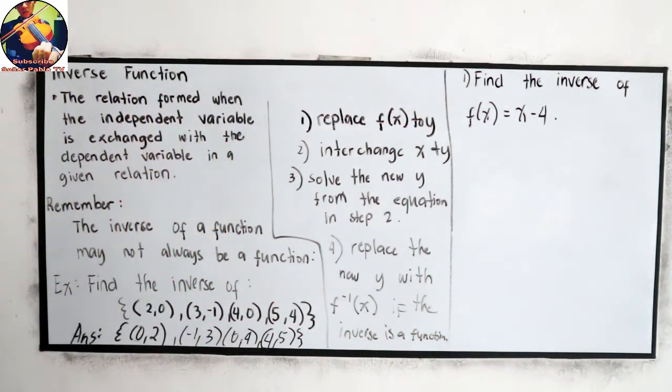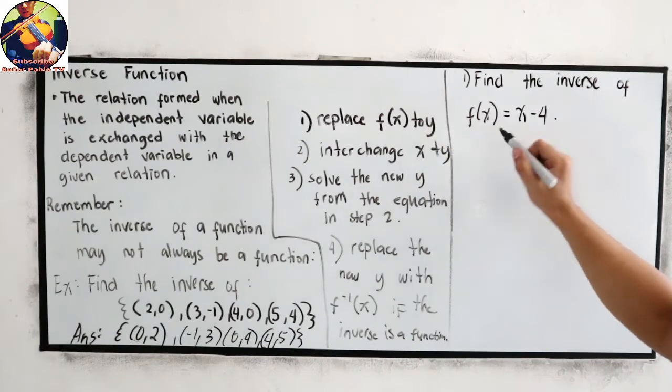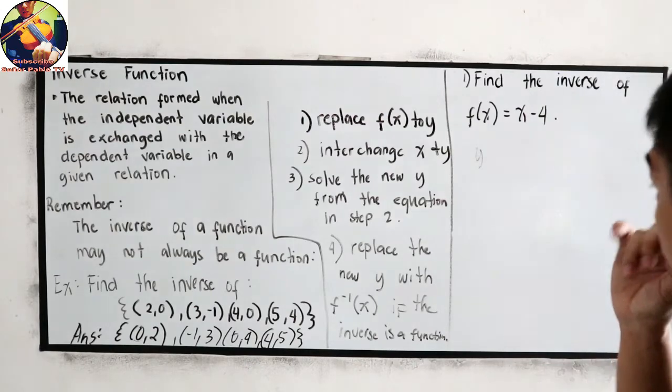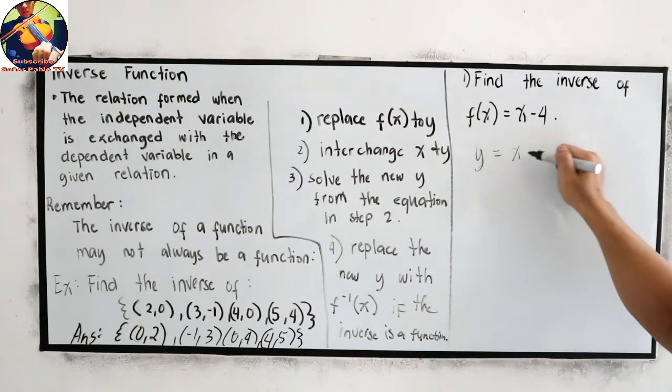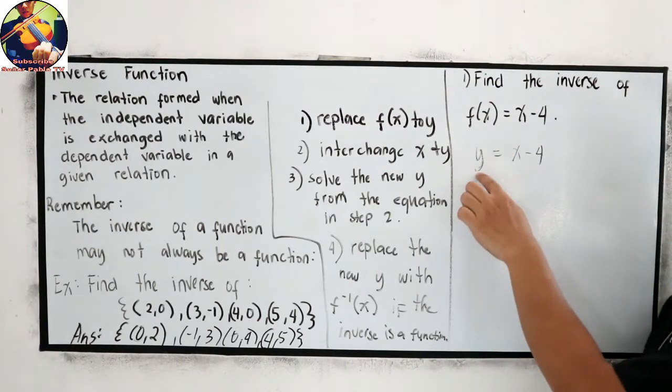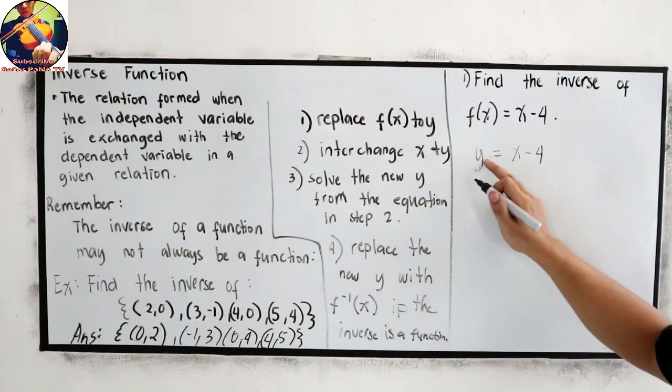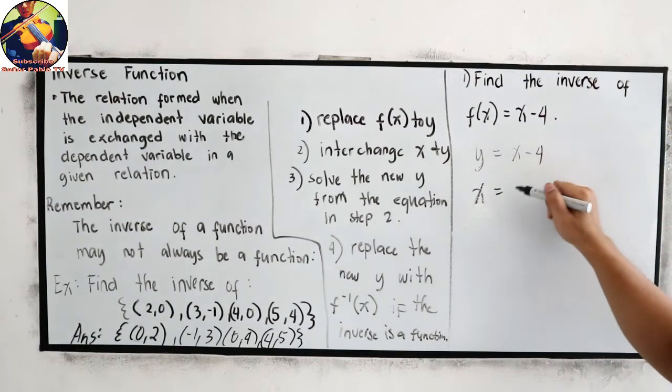So let us try to apply our steps in our example number one. Replace f(x) to y. So y = x - 4. Next, interchange x and y. So our y changes to x, and our x changes to y.